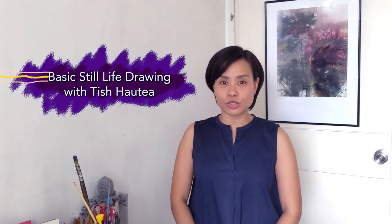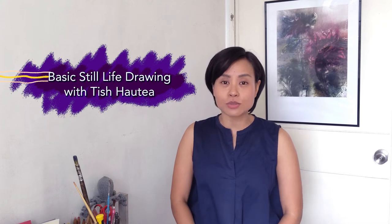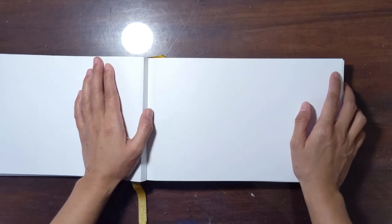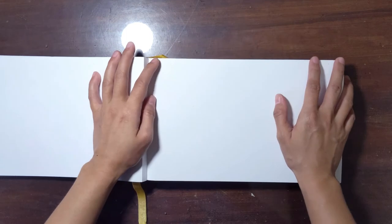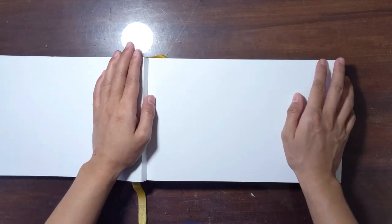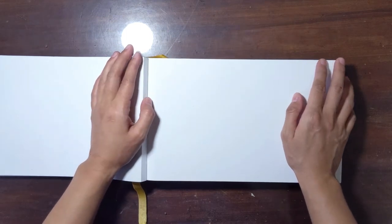I will also teach you how to do basic shading for the image that we will draw today. The materials we will need are a sketch pad, or you can also use a plain Oslo paper or plain bond paper.